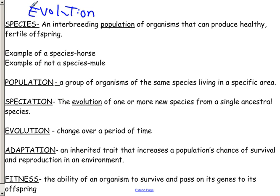Population, when we refer to that, is a group of organisms of the same species living within a particular area. And the other term, speciation, involves the evolution of one or more new species from a single ancestral species. Again, species refers to a population, not an individual.